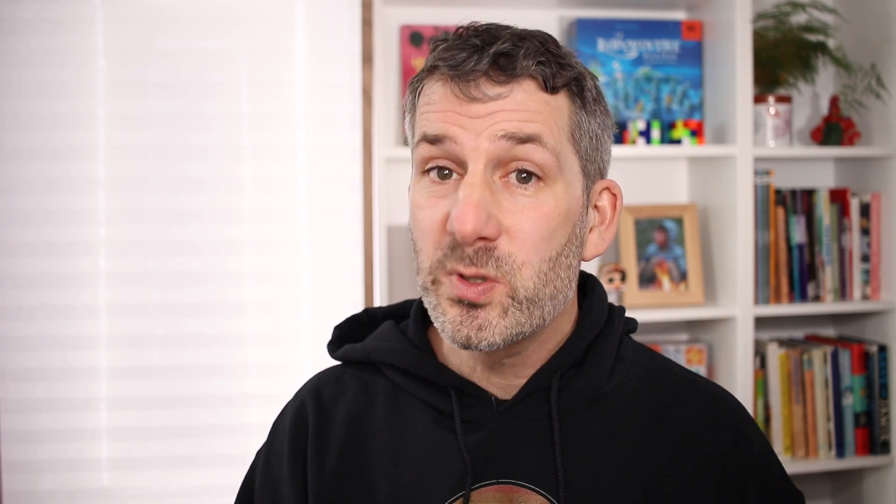The first common mistake that I come across is to do with estimating. In your GCSE exam, you're almost certainly going to be asked to estimate the answer, and it's almost certainly going to be in the first paper—that's the non-calculator paper. Typically you'll see something like this, where you're asked to calculate 0.526 multiplied by 39.6 squared, all over the square root of 97.65.